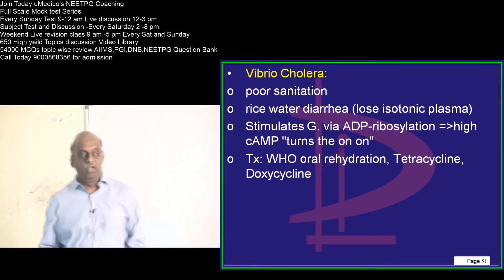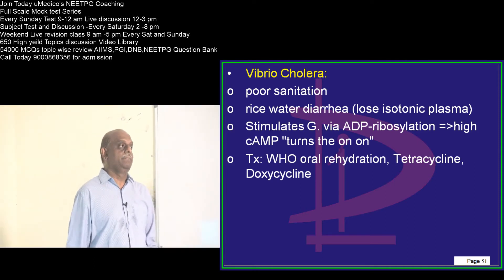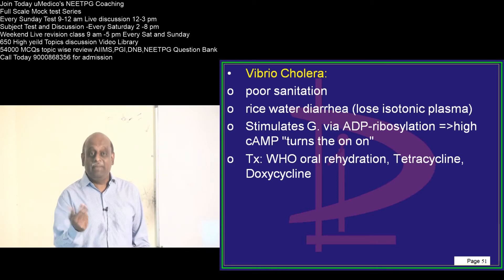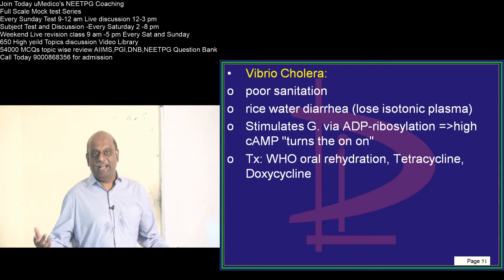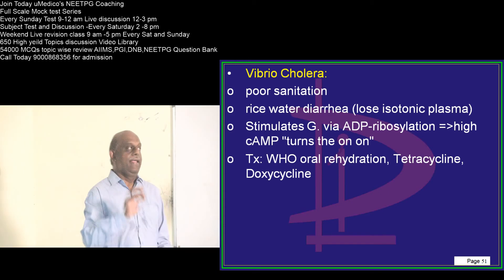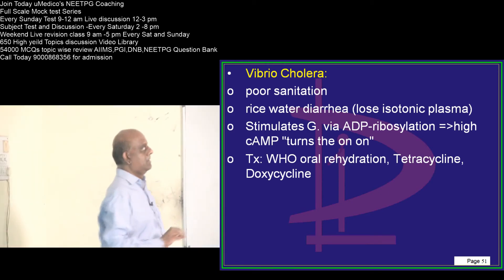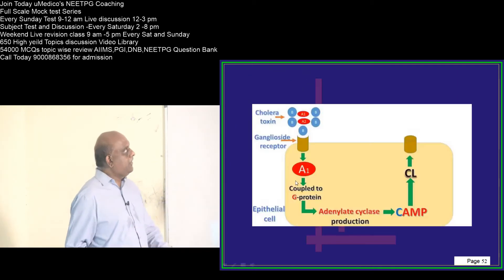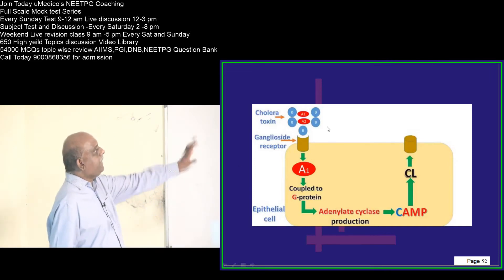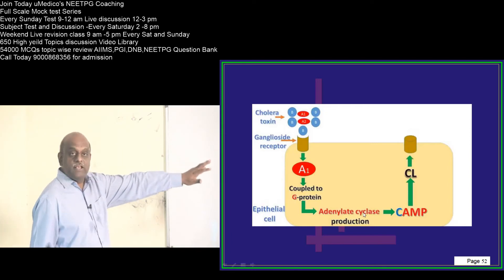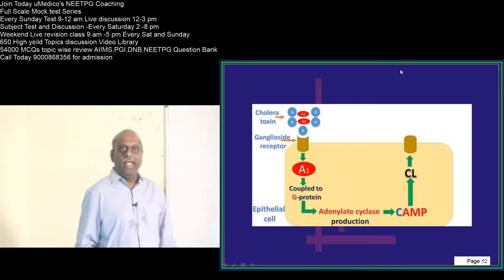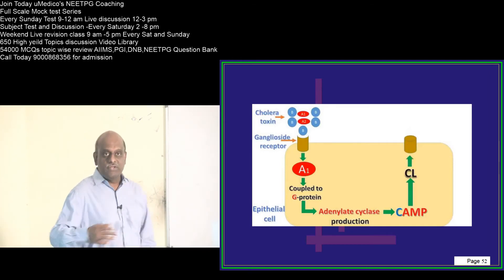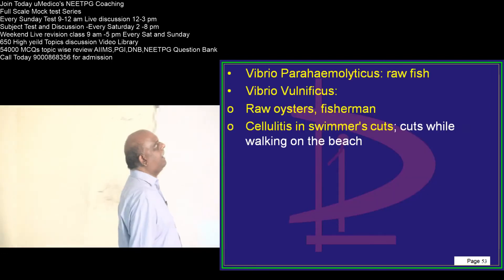Then comes Vibrio cholerae. The bullet is ADP ribosylation — turning on high cyclic AMP production, similar to E. coli, which is the nature of cholera toxin. How do you treat? Oral rehydration, tetracycline, doxycycline are the ones to use. The cholera toxin acts on the ganglioside receptors, and adenylate cyclase production causes increased cyclic AMP, which in turn activates CFTR — cystic fibrosis transmembrane receptor — leading to secretion of chloride-rich diarrhea in case of Vibrio cholerae.